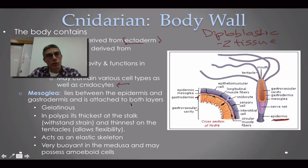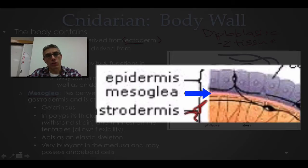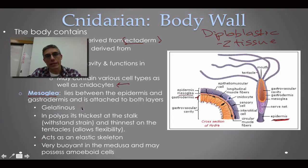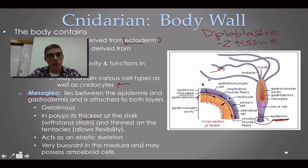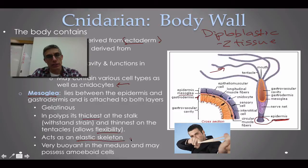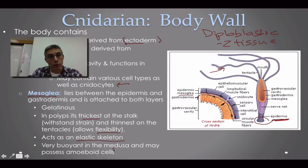In between the outer epidermis and the inner gastrodermis, we have another layer called the mesoglea, which lies between and is attached to both layers. This is not a cellular layer — it's a gelatinous material. In polyps, it's thickest at the base to support the animal and thinnest in the tentacles to allow flexibility. It acts as an elastic skeleton and is very buoyant in the medusa, and may contain amoeboid cells.